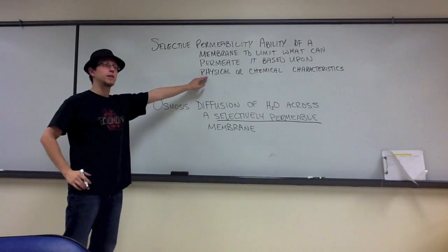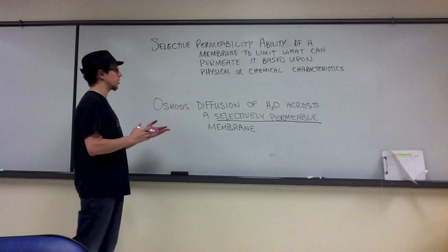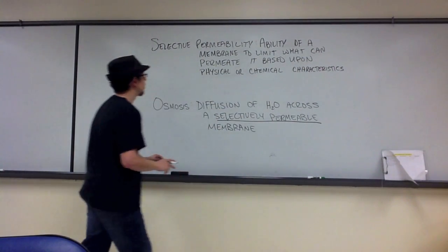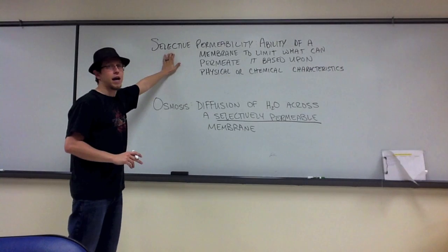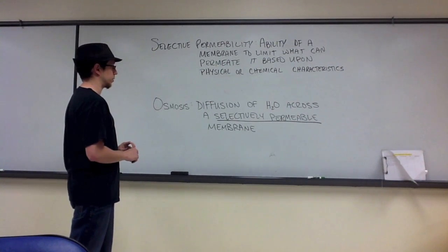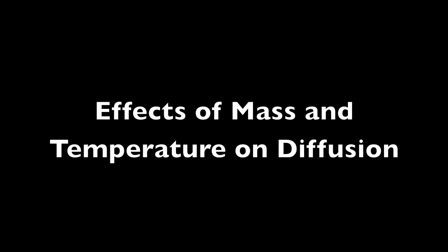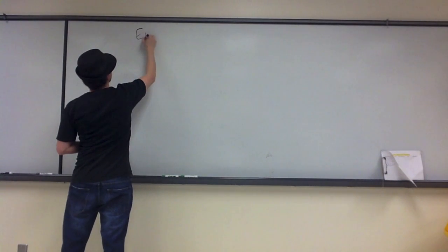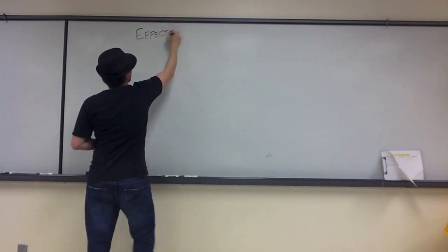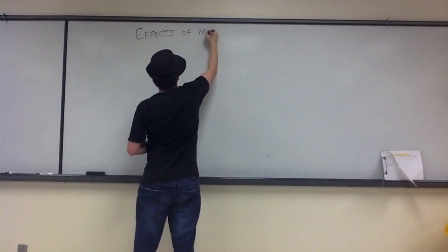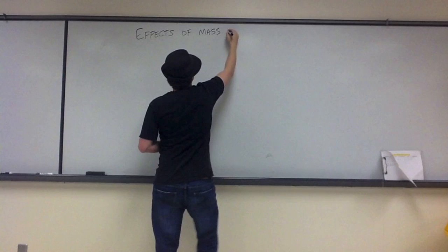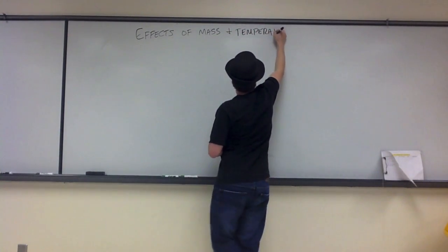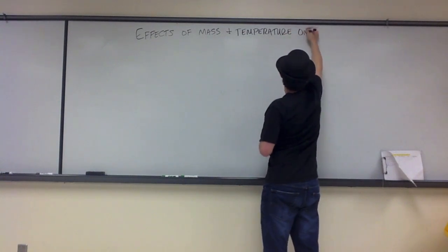Physical characteristics would be the relative size of an ion or a molecule. Chemical characteristics might be the charge, whether they are polar or non-polar. This is going to come back in several of the experiments we're performing in this particular lab. In this review, I'm going to talk about the effects of mass and temperature on diffusion.